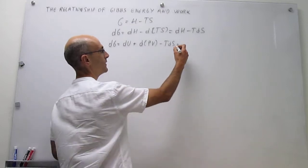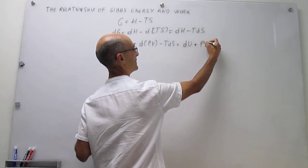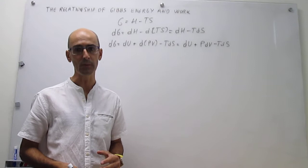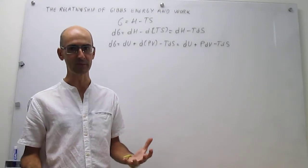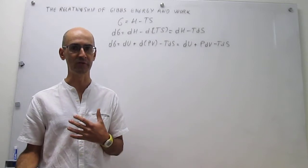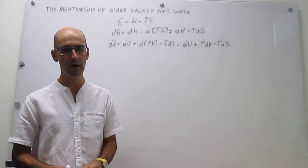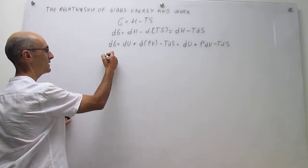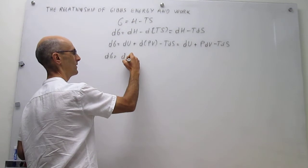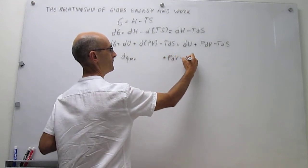Assuming constant pressure, we can say this is just the change in internal energy plus P·dV minus T·dS. Now we can take this internal energy and apply the first law, and we're going to do so for a reversible process. What we learn here will ultimately be independent of whether the process is reversible or not, since Gibbs energy is a state function and path independent. For a reversible process, dU equals the sum of heat and work, so we write dQ_rev plus dW_rev, plus P·dV minus T·dS.